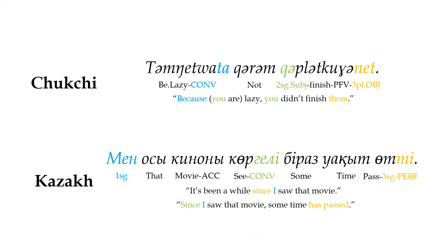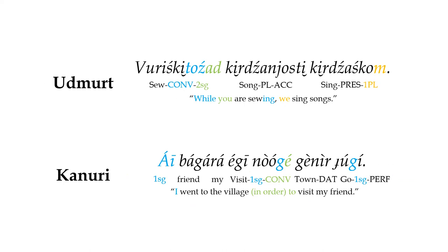Since converbs usually evolve from non-finite verb forms, most of the marking for person, number, and tense will go on the main verb of the sentence, while the converbs usually won't take any of the typical verb morphology, or if they do, they'll usually only take a reduced or limited set, although there are occasional exceptions to this. Most often, the subject of the converb clause will be assumed to be the same as the subject of the main verb unless otherwise specified.